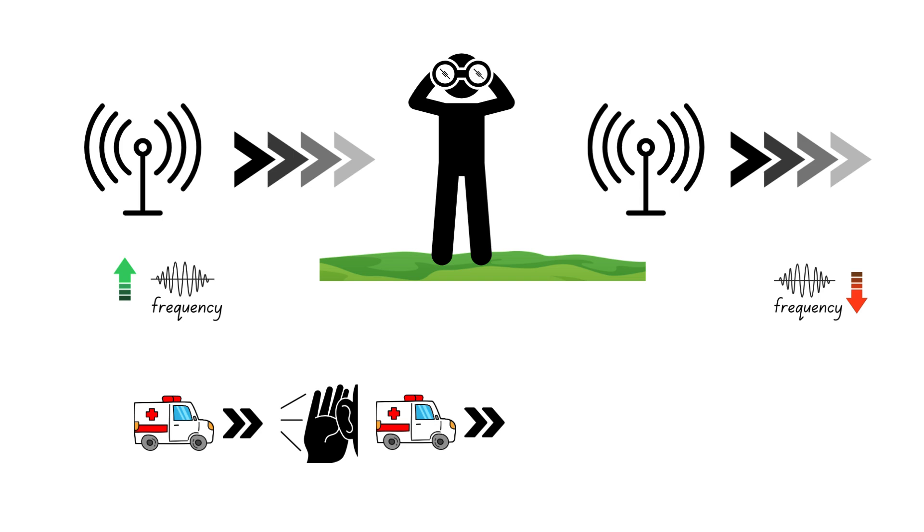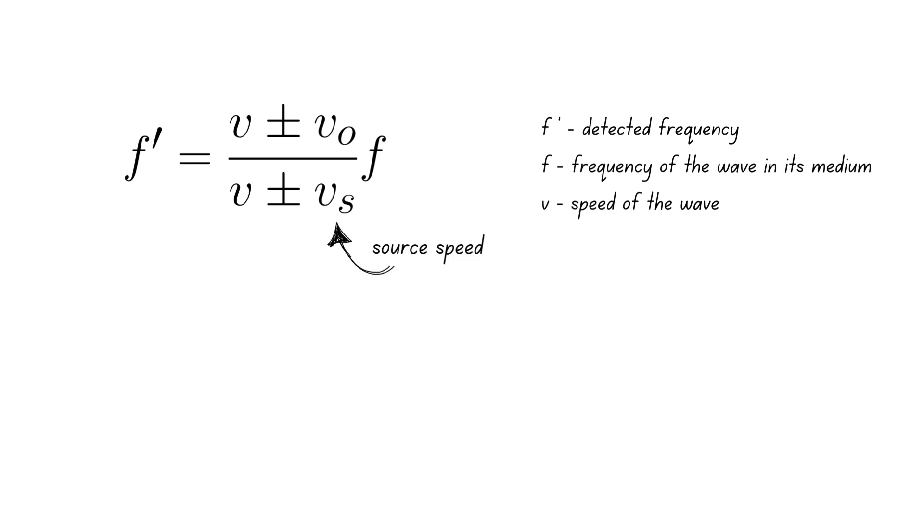In general, the Doppler effect occurs whether the source is moving, the observer is moving, or both are moving. The frequency shift can be calculated using this formula, which accounts for both the speeds of the source and the observer.